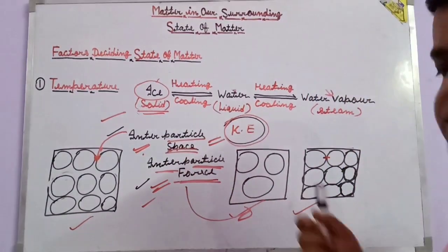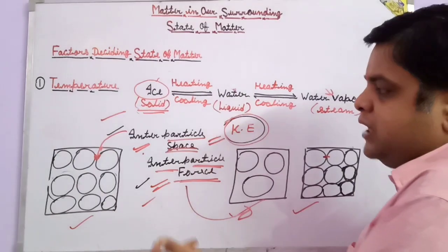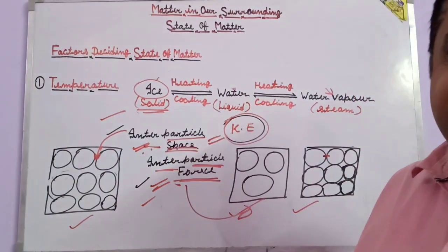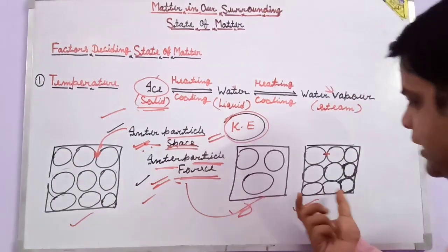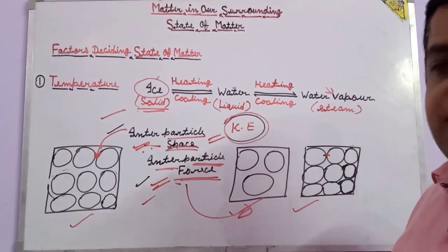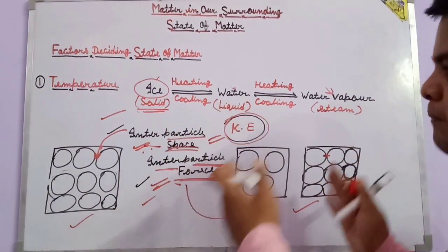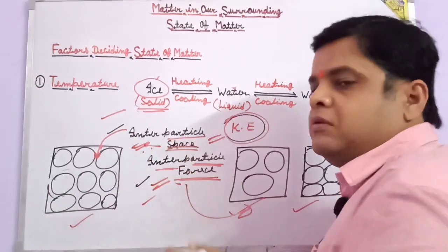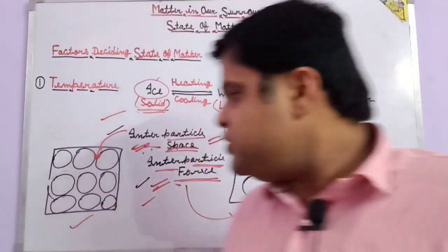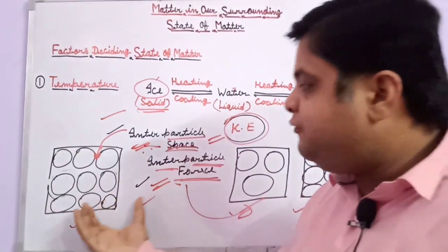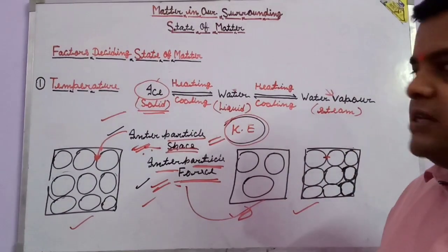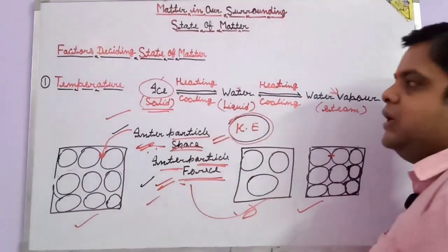In the gas condition, the inter-particle space is very high and the inter-particle forces are very less. By these conditions — the particles attracting each other and the space created between them — different states are formed: solid, liquid, and gases. We take the example of water.